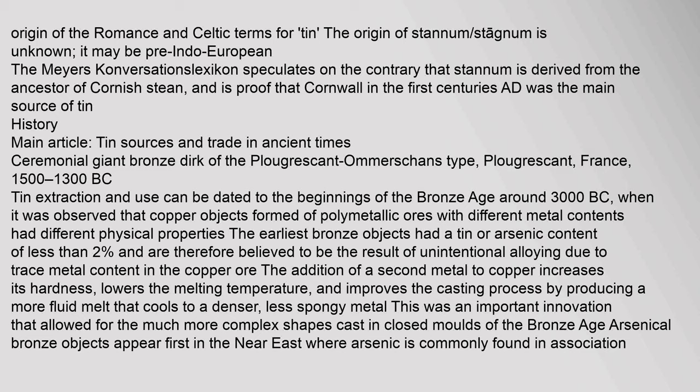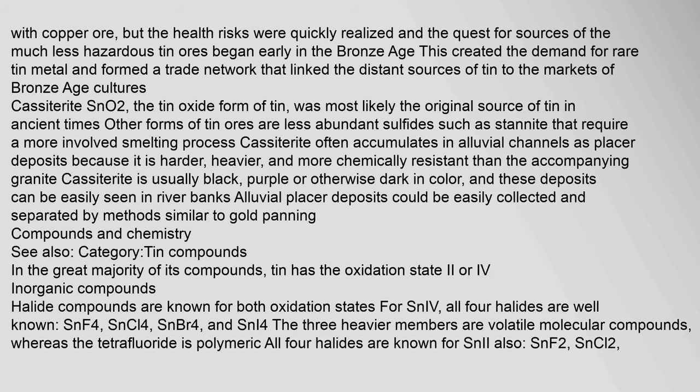Arsenical bronze objects appear first in the Near East where arsenic is commonly found in association with copper ore, but the health risks were quickly realized and the quest for less hazardous tin ores began early in the Bronze Age. Cassiterite (tin 4 oxide) was most likely the original source of tin in ancient times. Cassiterite is usually black, purple or otherwise dark in color and often accumulates in alluvial channels as placer deposits because it is harder, heavier, and more chemically resistant than accompanying granite. These deposits can be easily seen in riverbanks and collected by methods similar to gold panning.